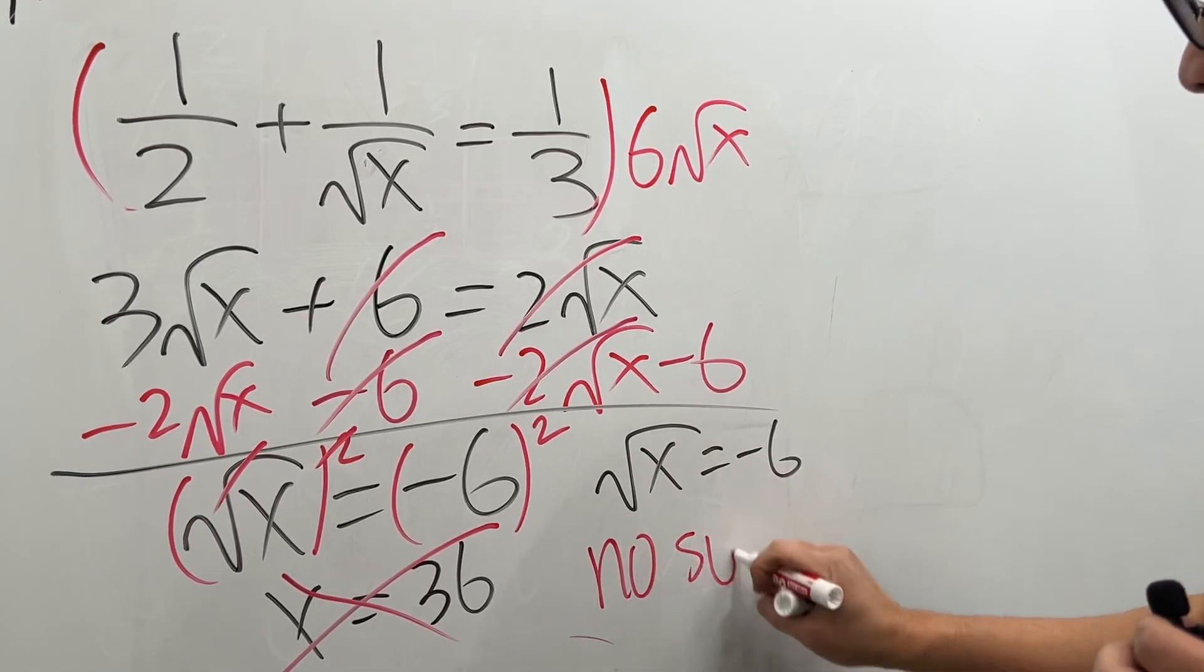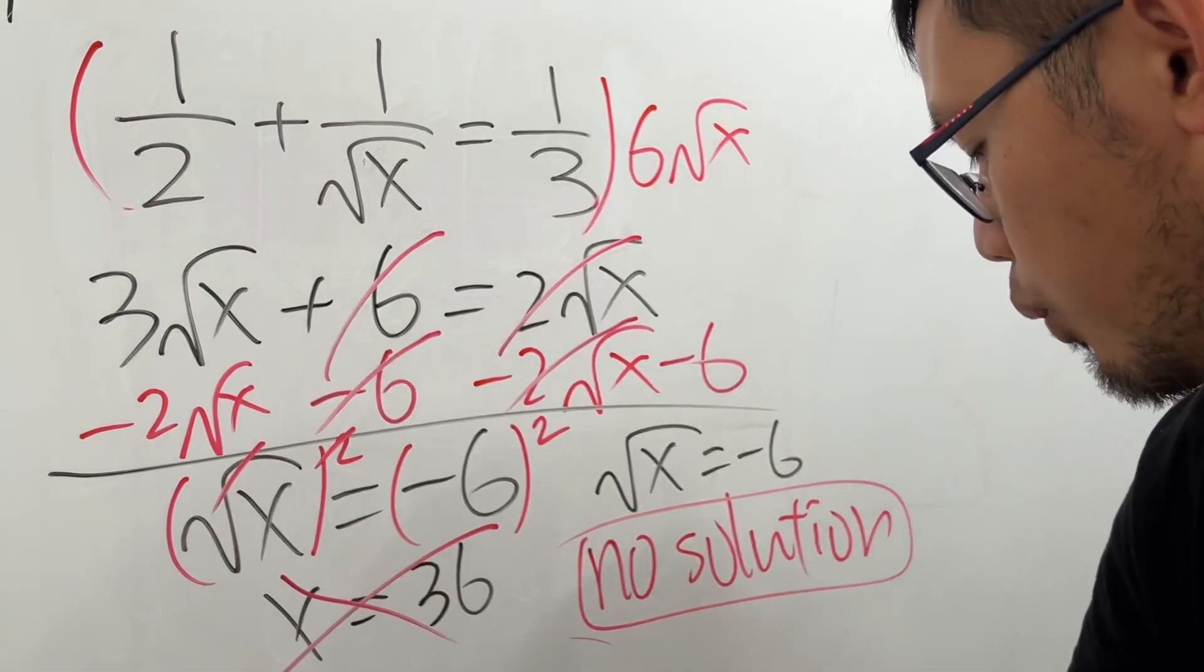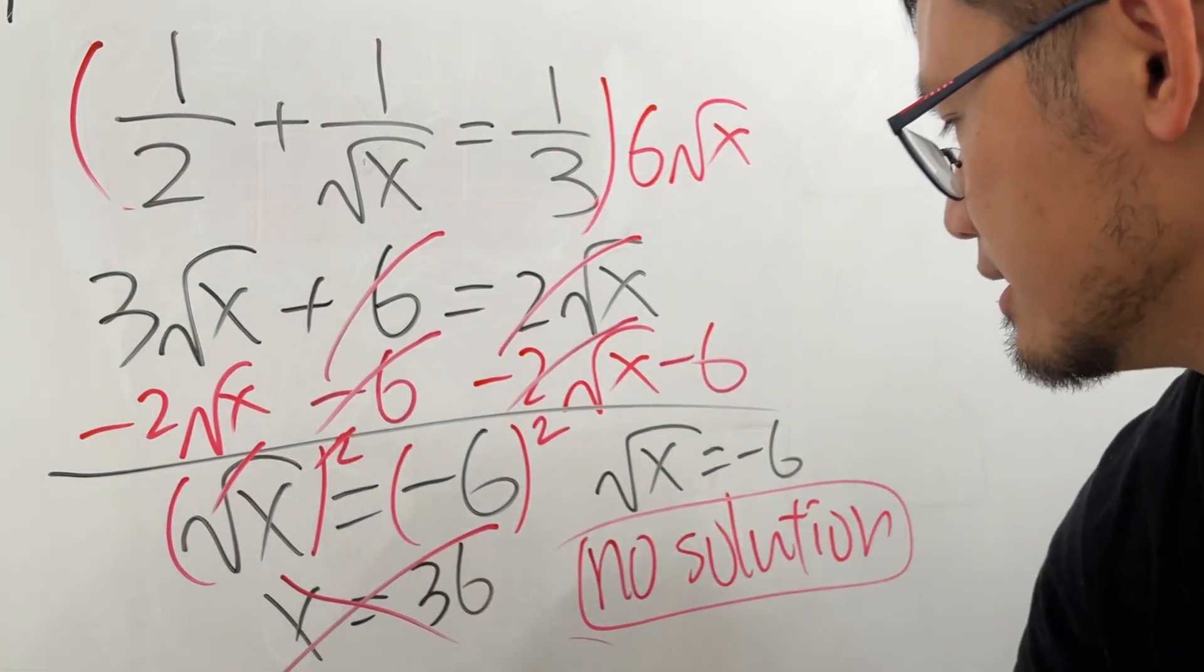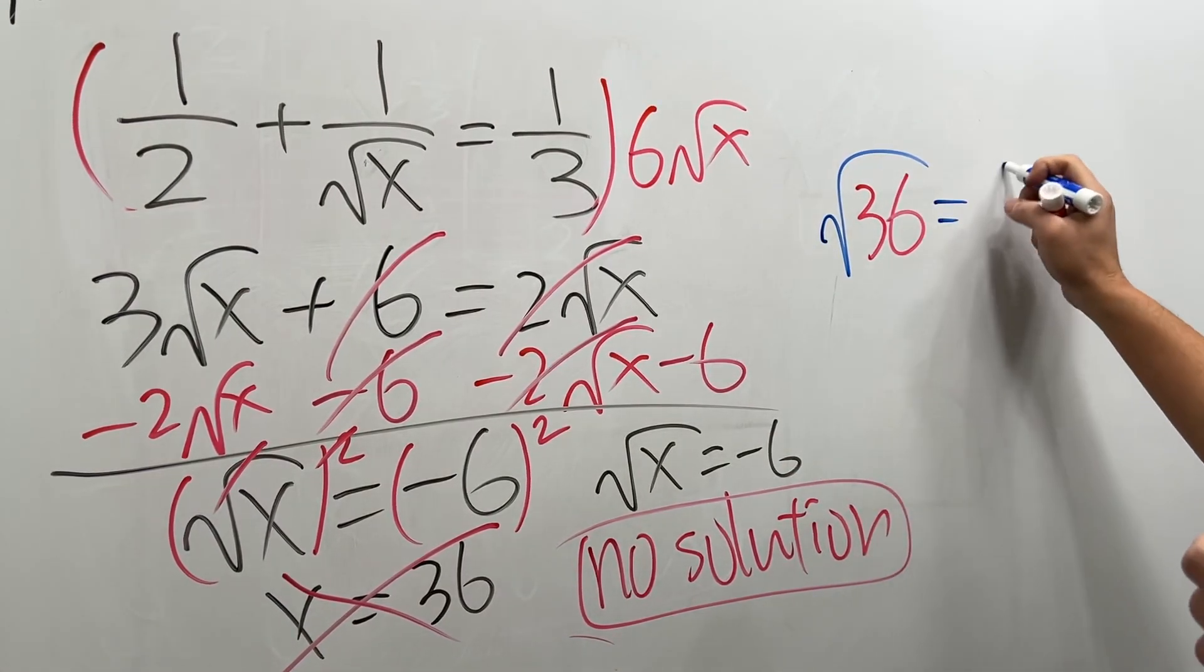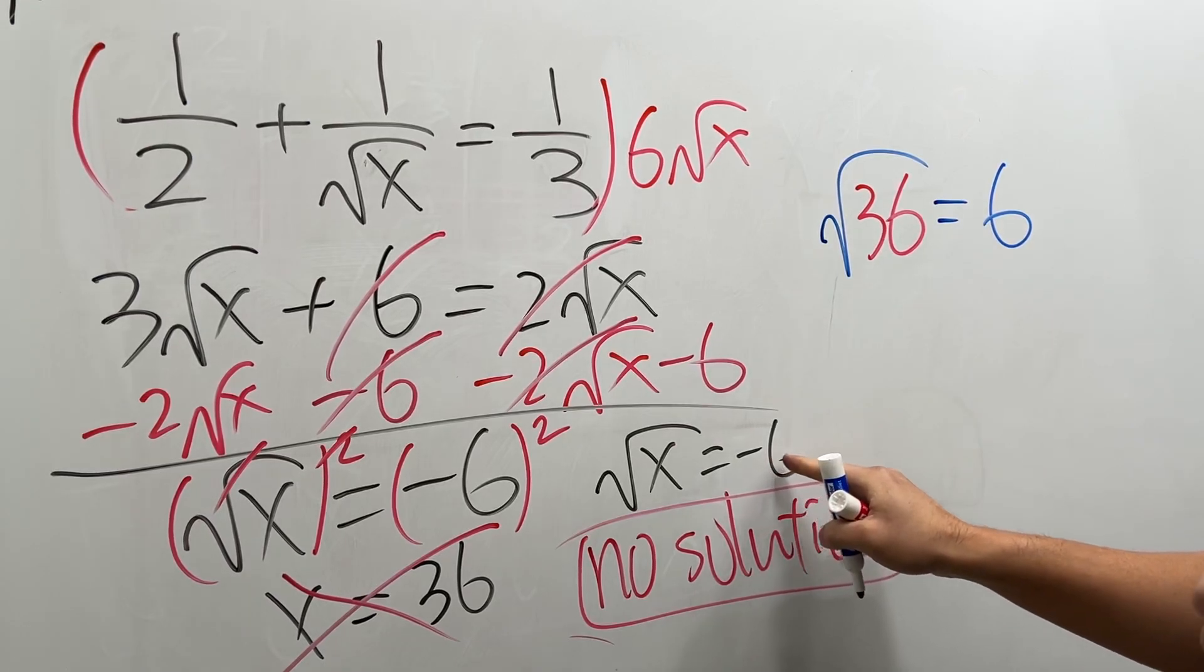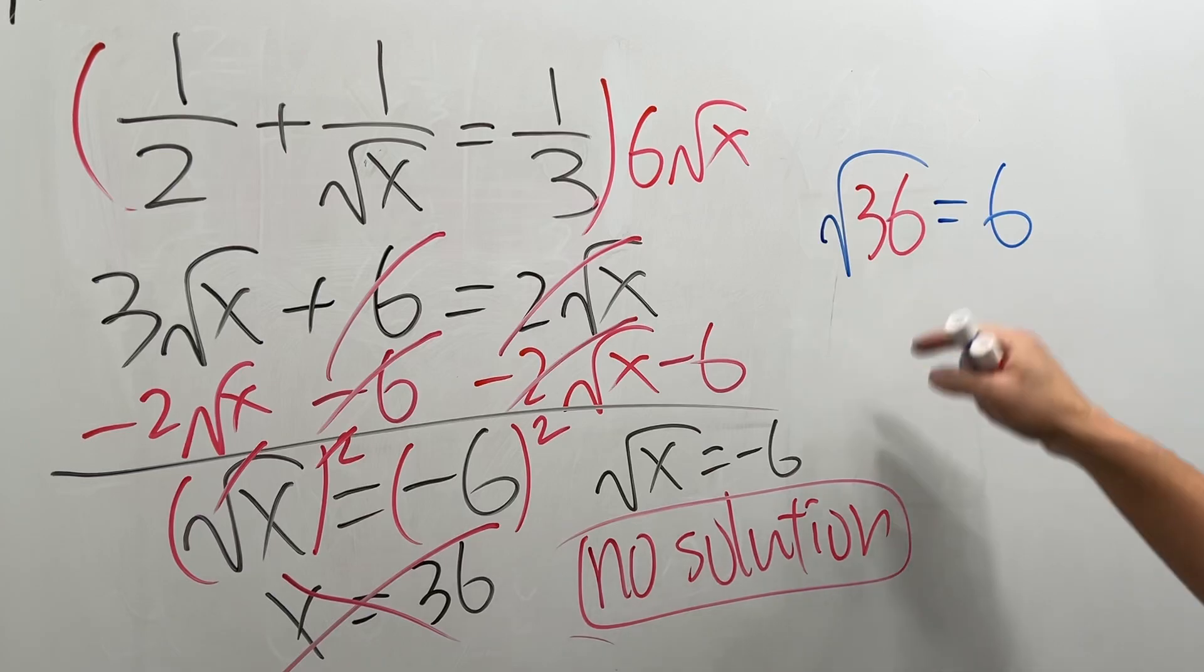Right here you can just say no solution, not even in the complex world. So why is 36 not the answer? Because if you plug in right here and check square root of 36, this right here is equal to just a six, not equal to negative six. So just a positive six. If you want to see more details on this, check out the other video in the description. That's it.